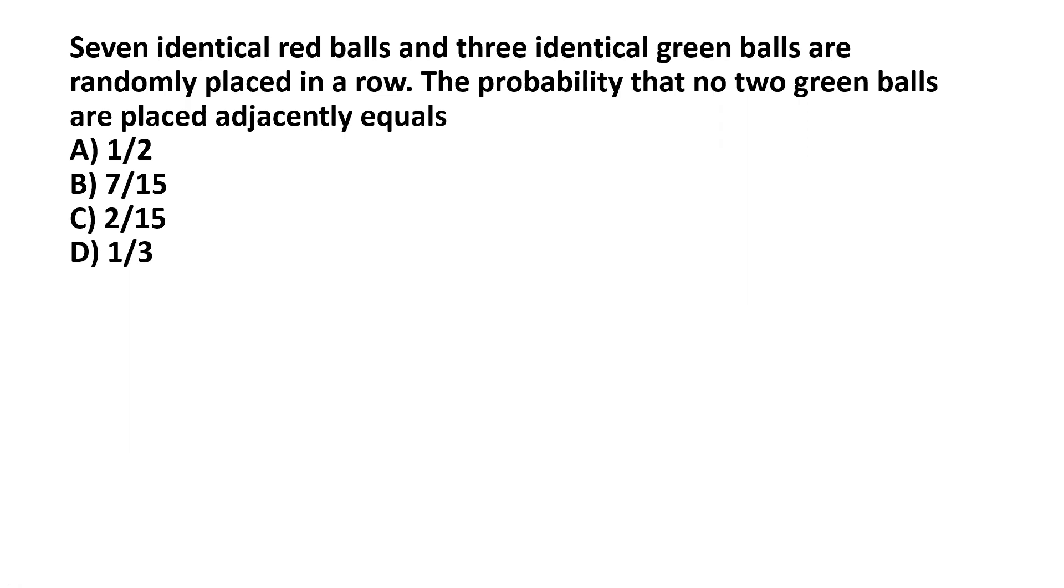We have seven identical red balls and three identical green balls. Let's start this problem by finding the denominator for the probability. The denominator is basically all possible arrangements without any restrictions on how the balls need to be, meaning that balls can be adjacent to each other or not adjacent.